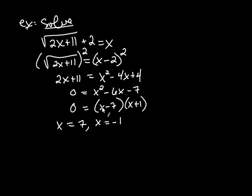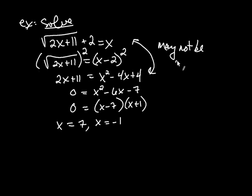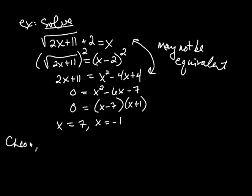Here's the important point: notice how I squared both sides of the equation. That means what I got after squaring may not be equivalent to the original equation — they may not be equivalent. That means there may be numbers that satisfy the squared equation but don't satisfy the original. Both 7 and negative 1 satisfy the squared equation, but I'm not sure if they satisfy the original. We have to check both of them — not because we may have made an error, but because whenever you square both sides, you may have solutions to the latter equation that are not solutions to the original.